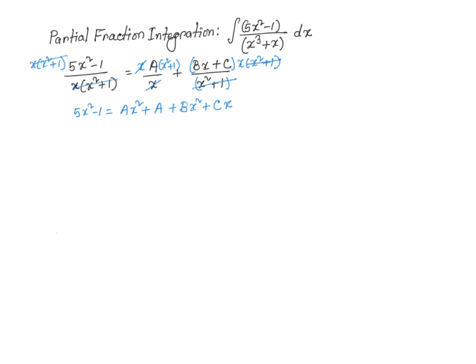Now, I'm going to go ahead and combine the like terms. So 5x squared minus 1 is equal to A plus B times x squared. So I'm combining these two plus Cx, which is this term, and plus the constant term A.